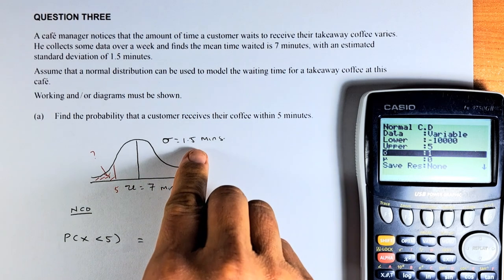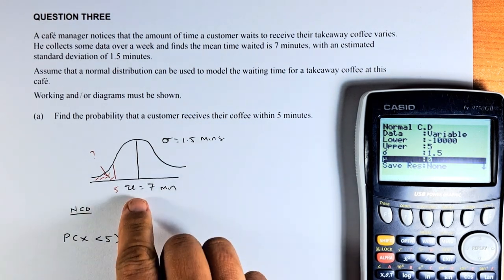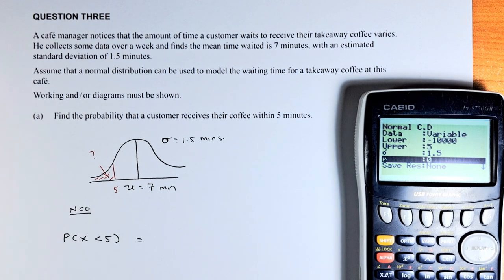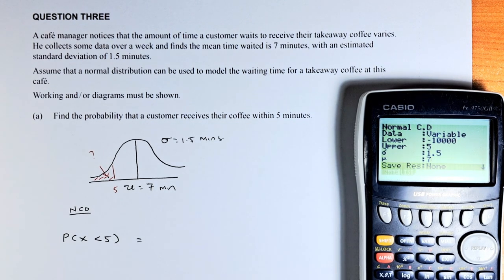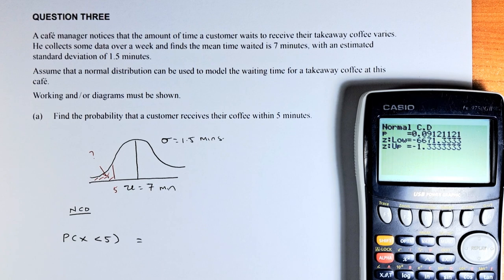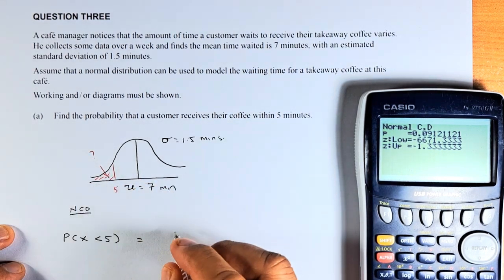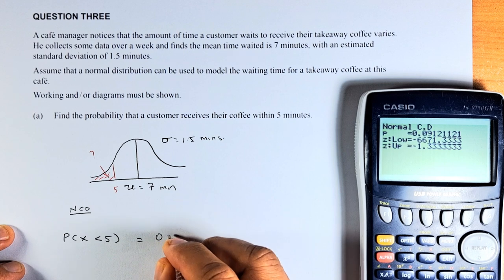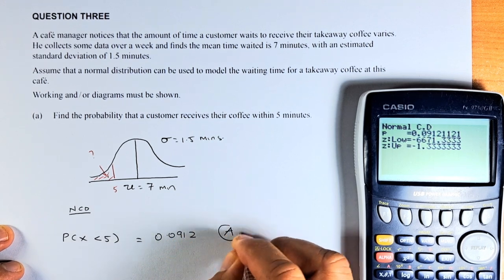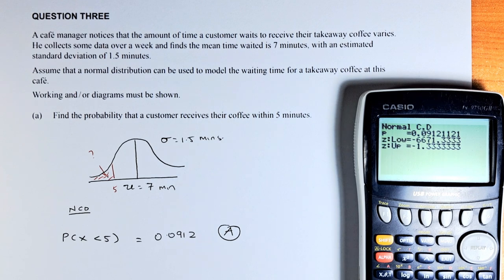Sigma is the standard deviation, it is 1.5 and the mean is 7, or mu is 7. Once you've done that, just press the execute button and the answer for less than 5 minutes is here. It's going to be 0.0912 and that will be an easy achieve for this paper.